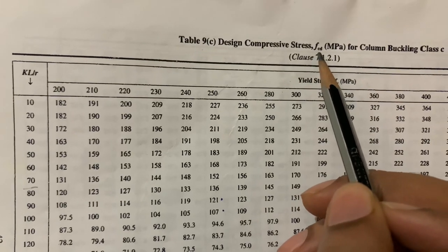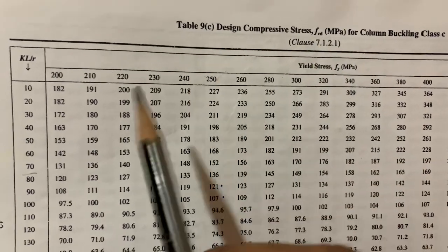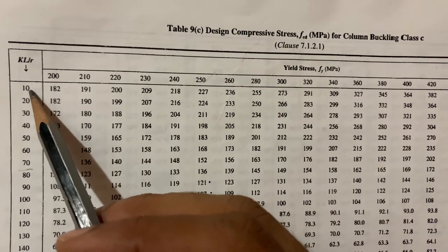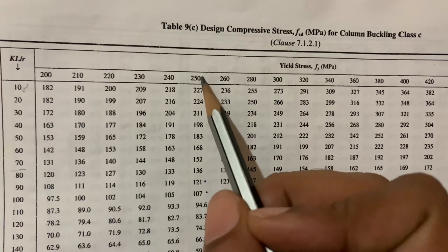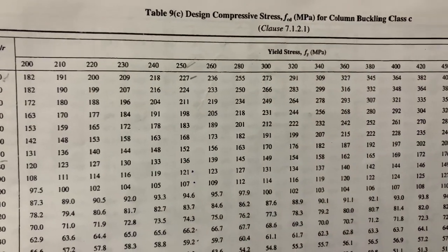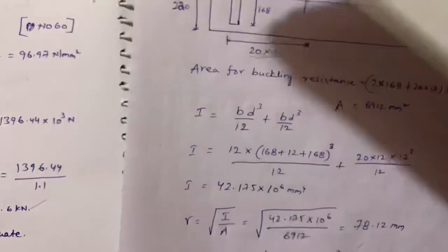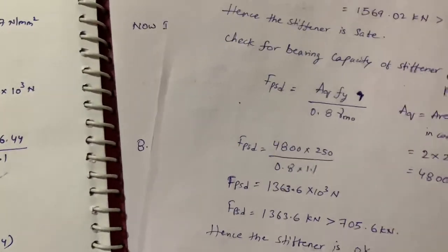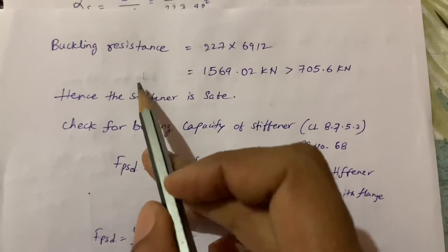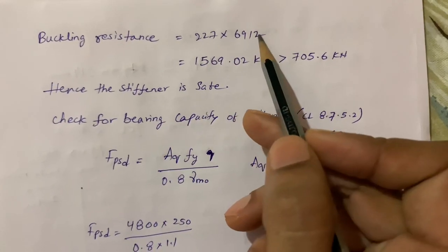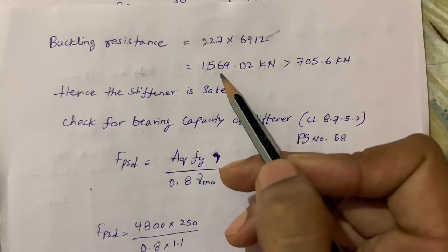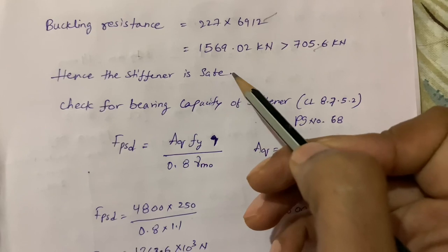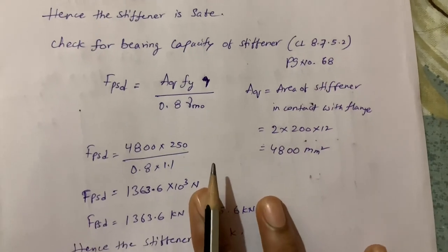From Table 9C page 42, for kL/r ≈ 10 and fy = 250, the design compressive stress fcd = 227 N/mm². The buckling resistance = fcd × A = 227 × 6912 = 1569.02 kN, which is greater than the applied shear force. Hence the stiffener is safe against buckling.